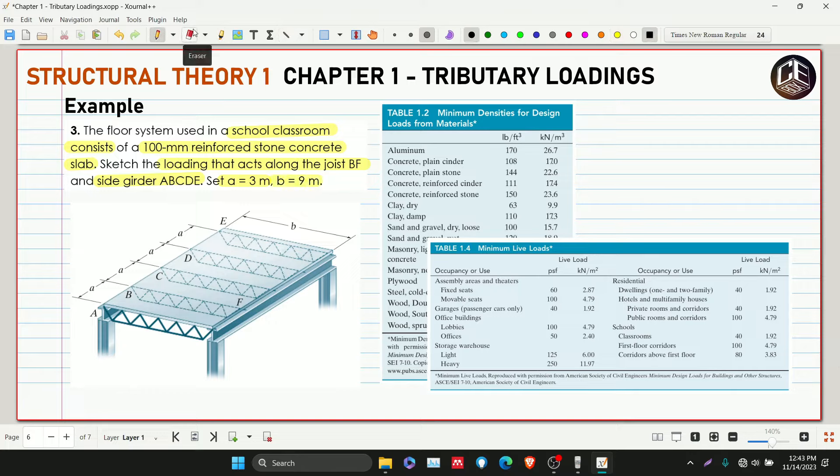Let's find the loadings based on our dead loads and minimum live loads. For dead load, it's reinforced stone concrete under the concrete reinforced stone metric system. The density for concrete slab is 23.6 kilonewton per meter cubed.